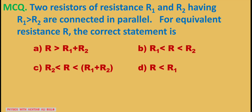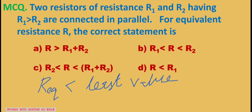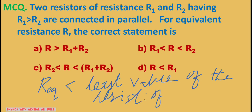When resistors are in parallel combination, their equivalent resistance will be less than the least value of resistance of the resistors. This means the equivalent resistance will be less than every individual resistance value.